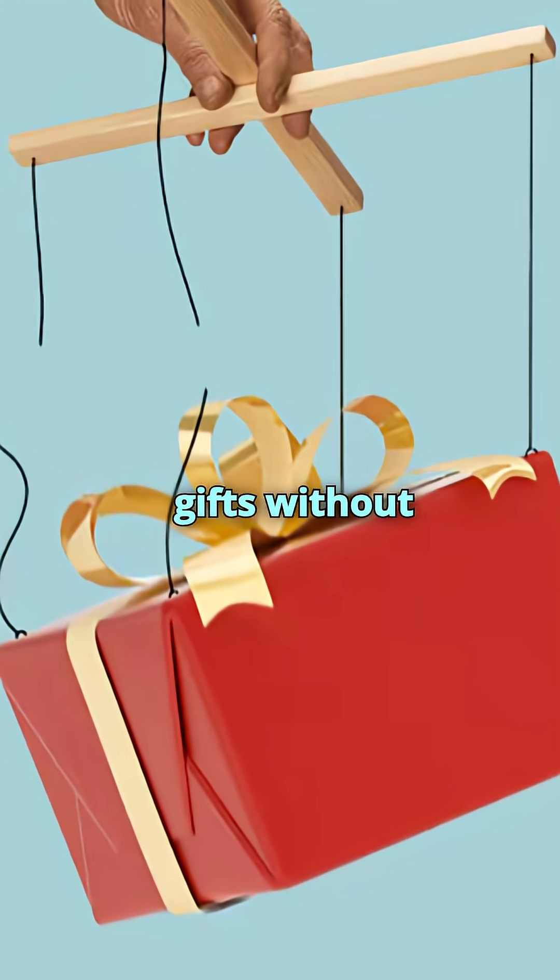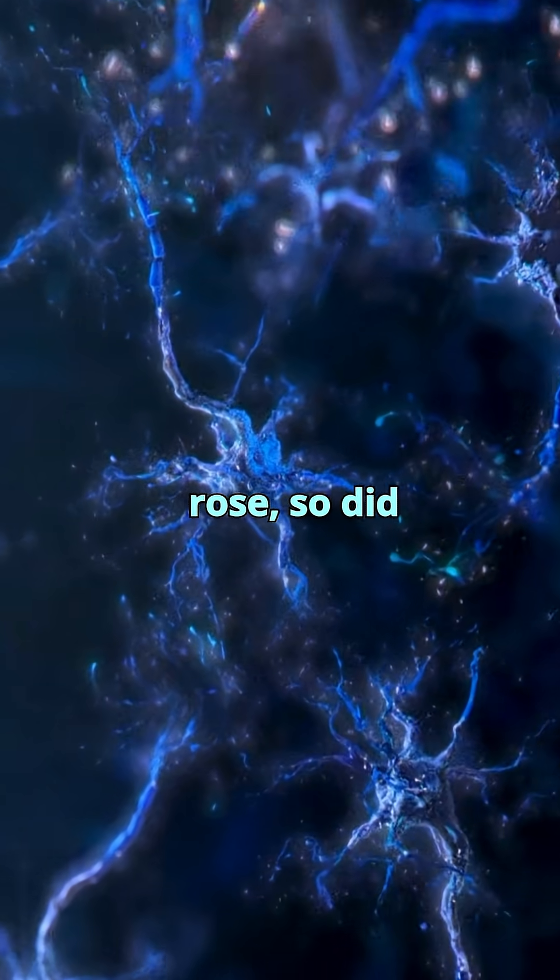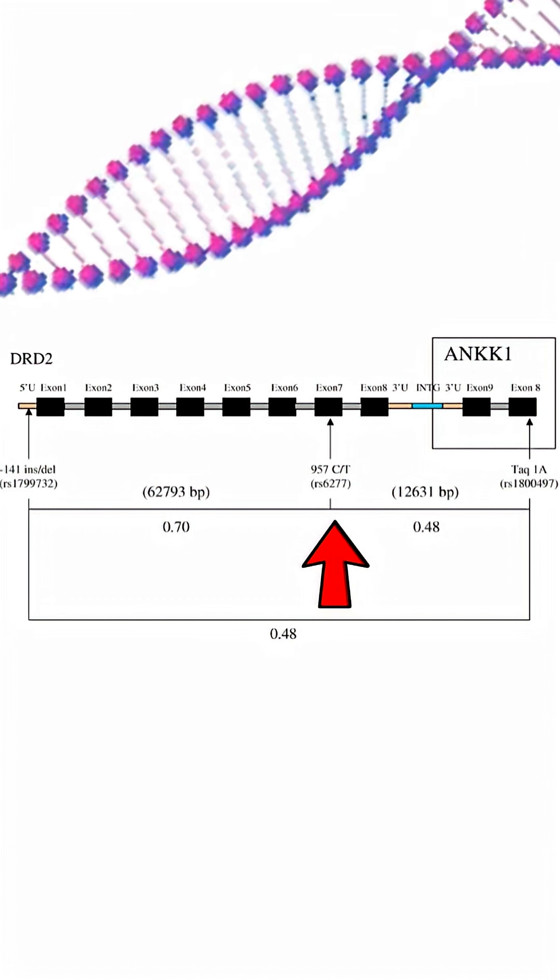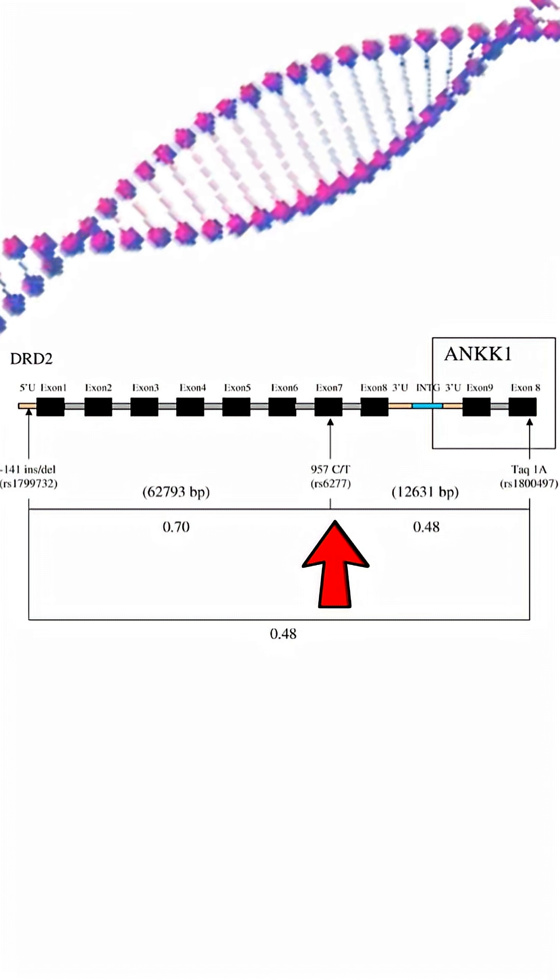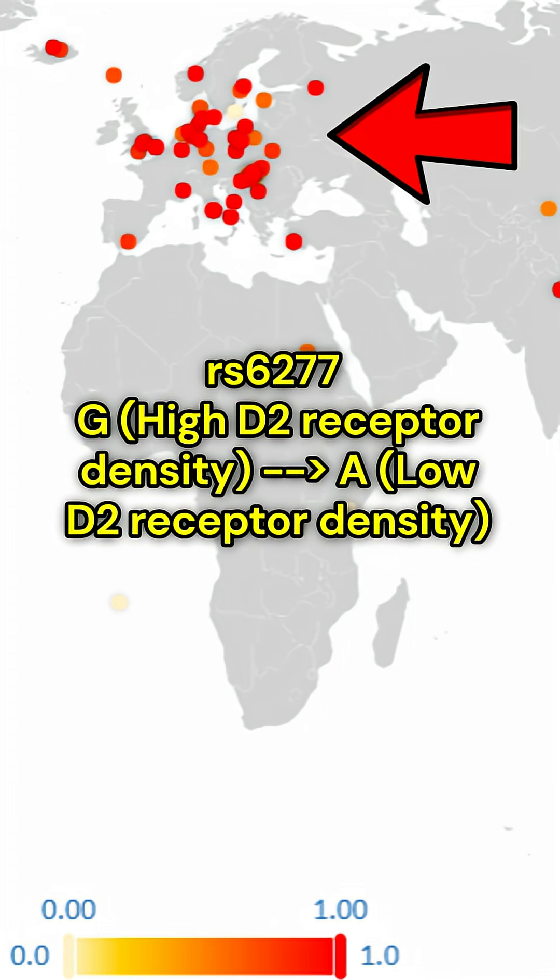But evolution doesn't give gifts without strings attached. As D2 receptor availability rose, so did the prevalence of psychotic disorders like schizophrenia and bipolar, and that's likely when RS-6277 stepped in. A mutation in this SNP led to the A allele, which reduced dopamine receptor expression, especially in European populations where the A allele is more common.